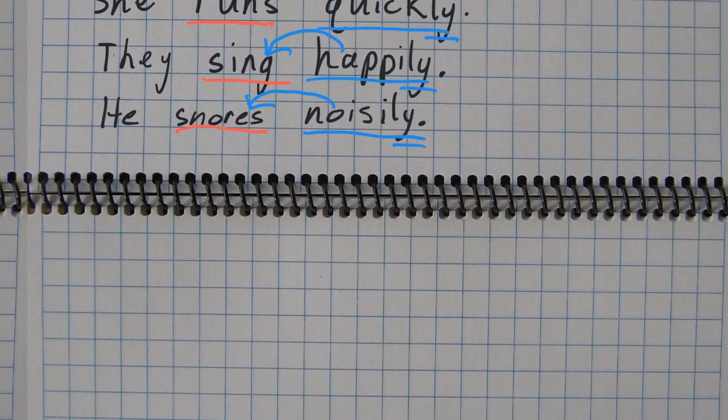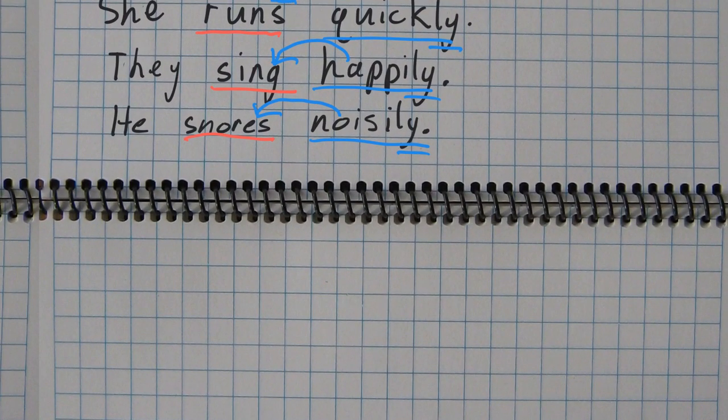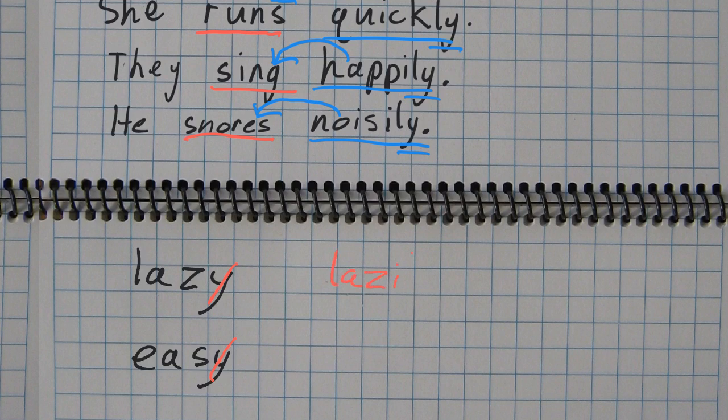And let's just make one quick note about the spelling pattern here. If the base word ends with the Y and you're making an adverb, you take off the Y and change it to an I. So lazy becomes lazily. Easy becomes easily. That's where you're getting the -ily pattern, when the base word has a Y at the end.